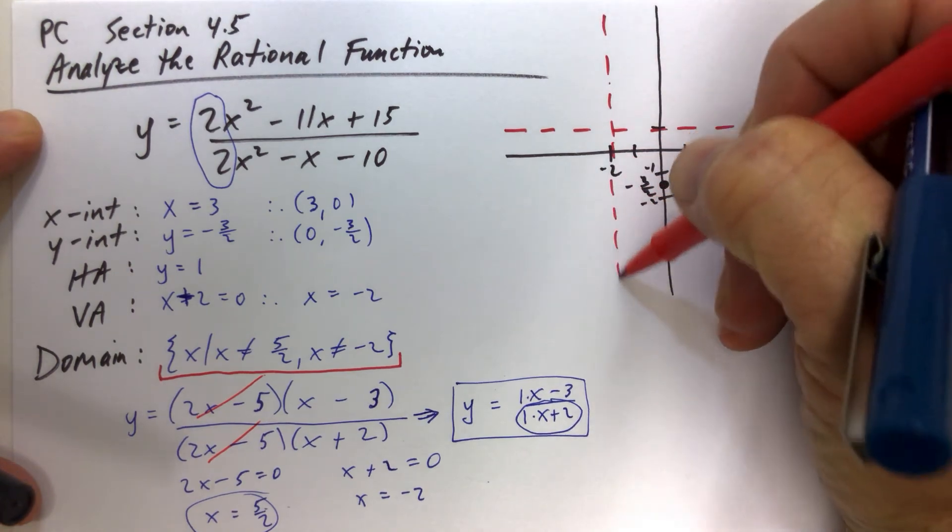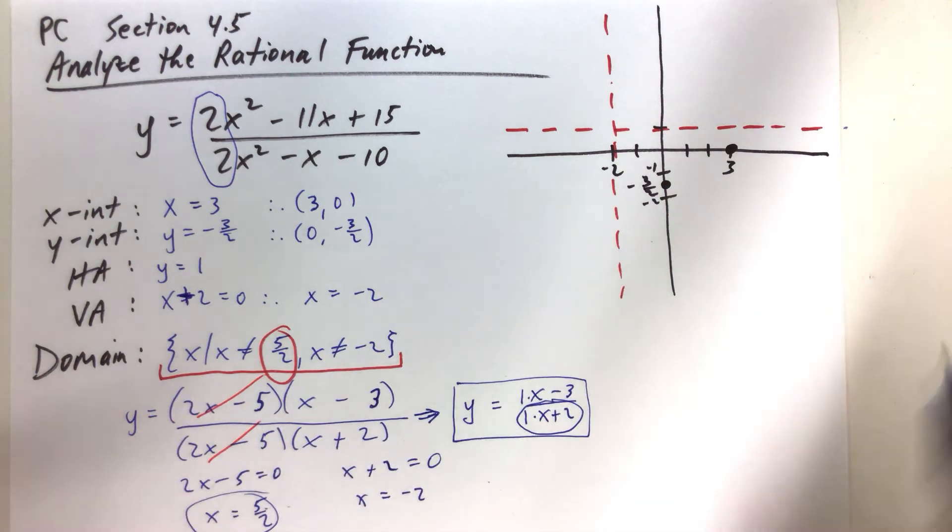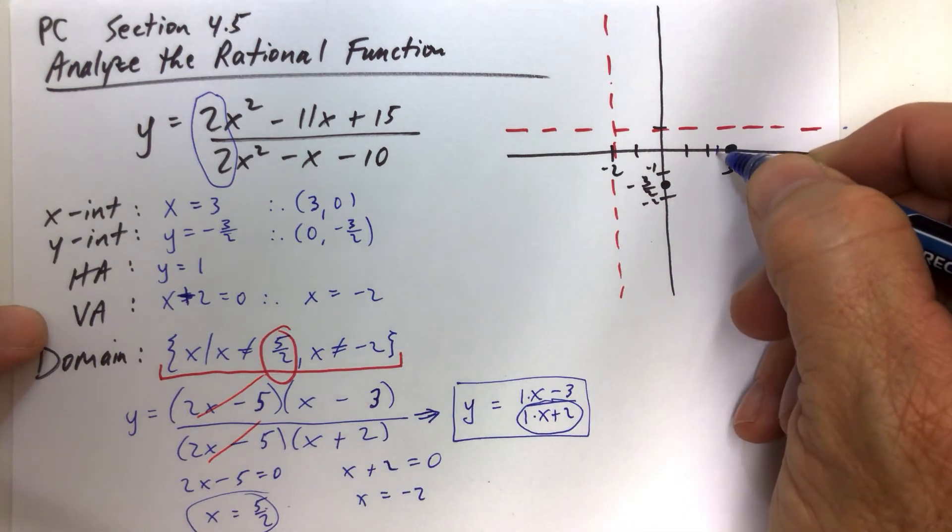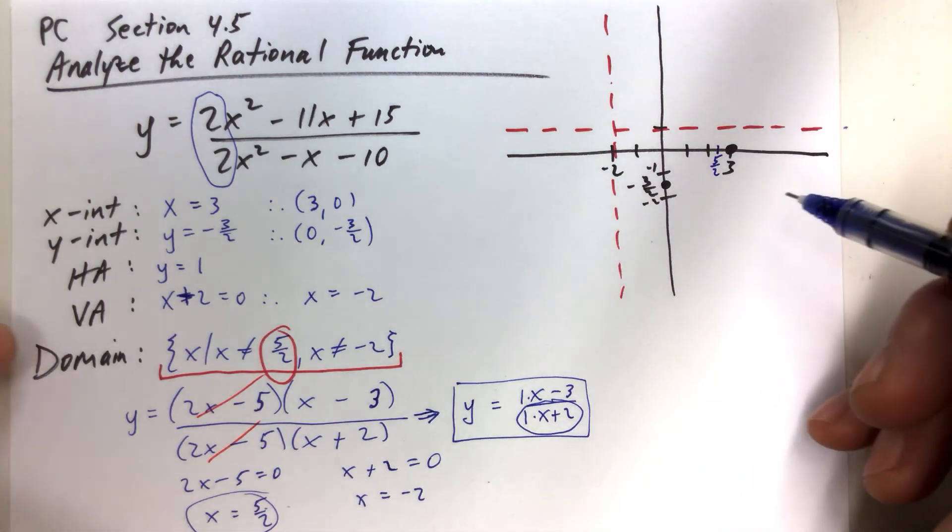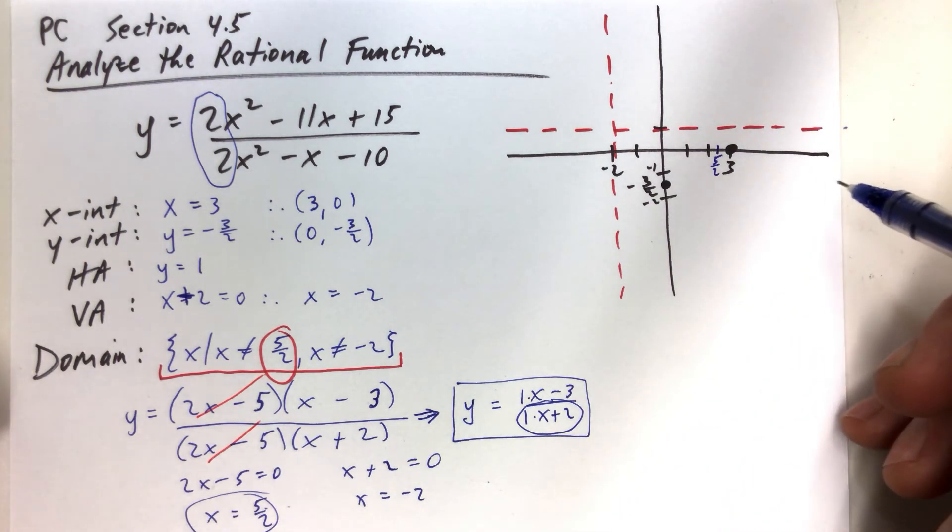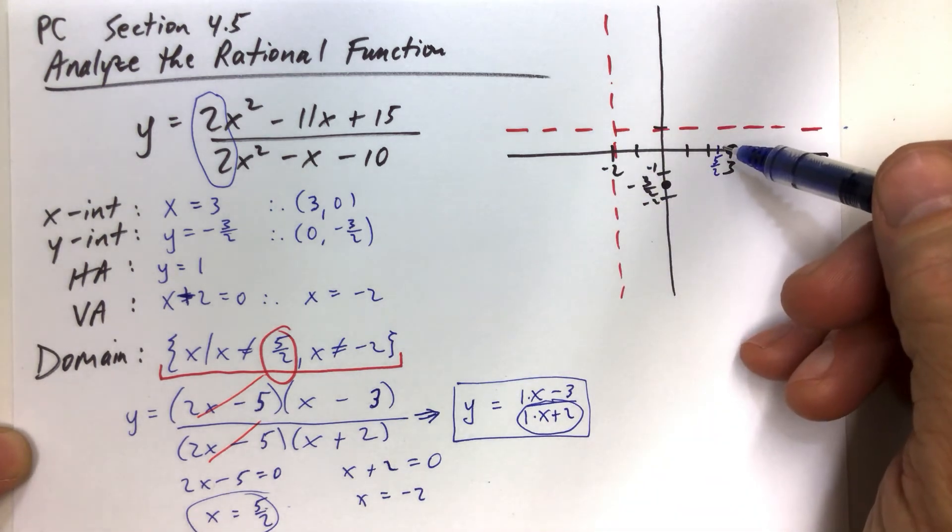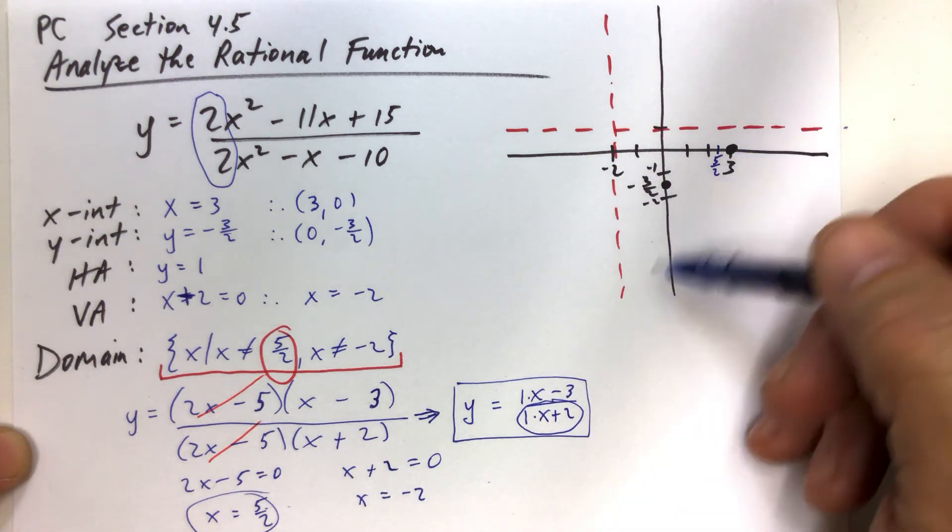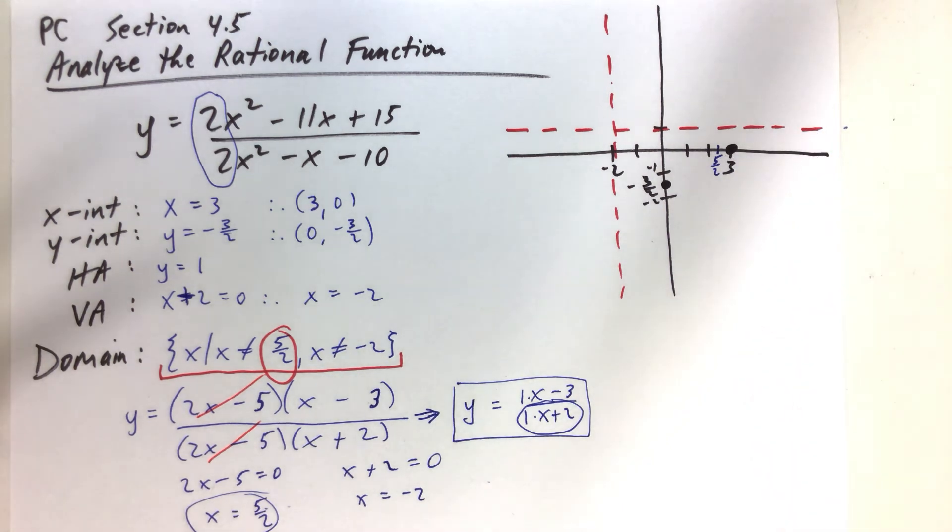Now, also, we don't want to forget about that 5 halves. Now, 5 halves is 2 and 1 half. So 2 and 1 half is right there. So that's 5 halves. So as soon as we draw the graph, as soon as we get to the part where x is 5 halves, we're just going to leave a hole. We're going to draw the graph normally, but just leave a hole right there where x is 5 halves.